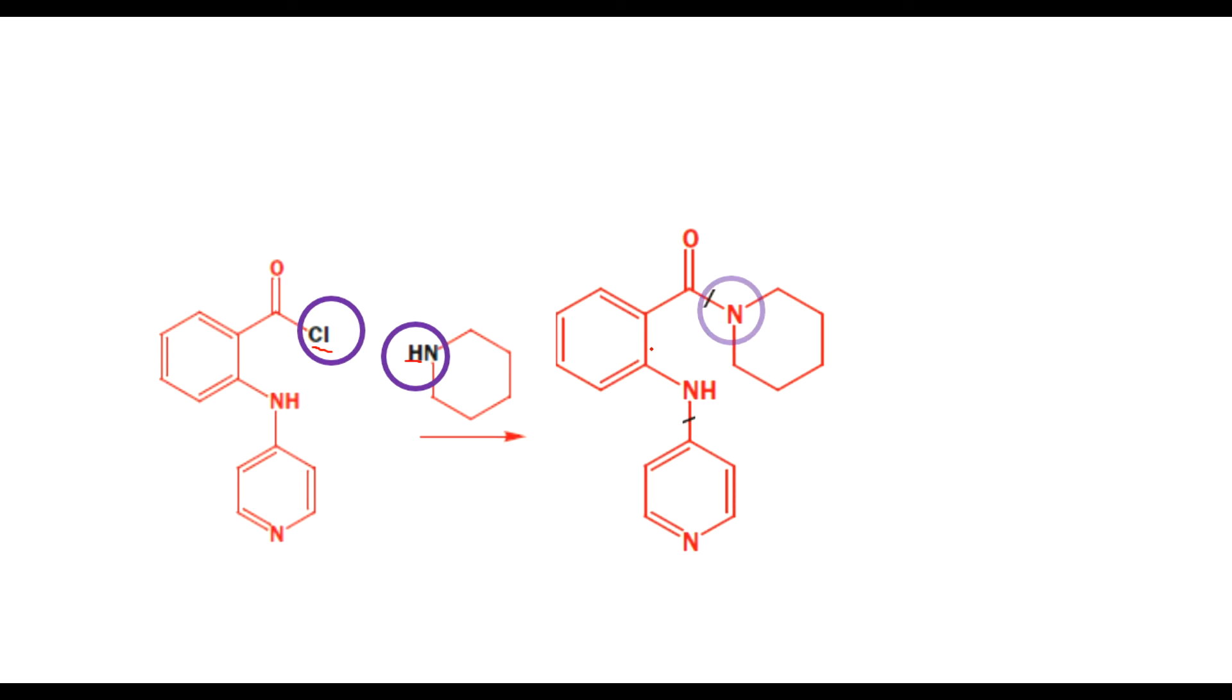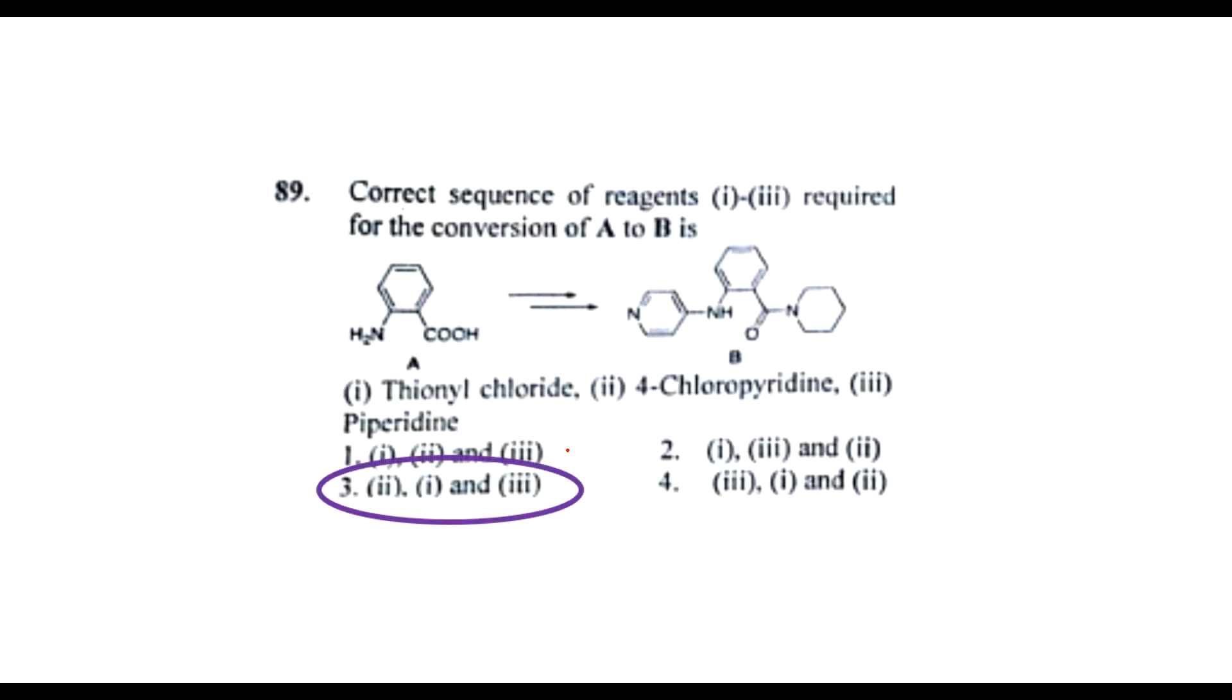We'll be getting this product, so the answer will be option 3. First we use 4-chloropyridine, then comes the thionyl chloride by converting the OH group, and then piperidine to replace the chlorine.